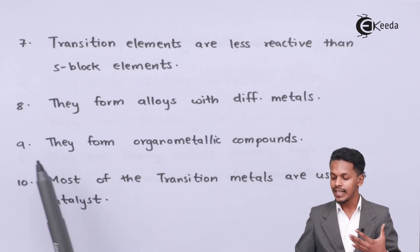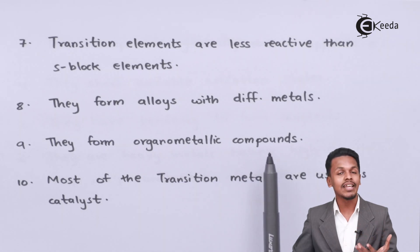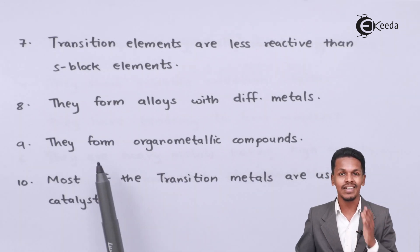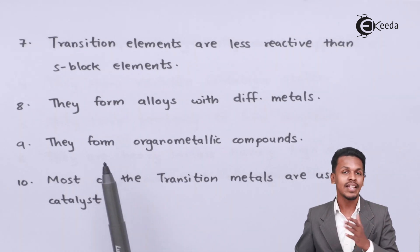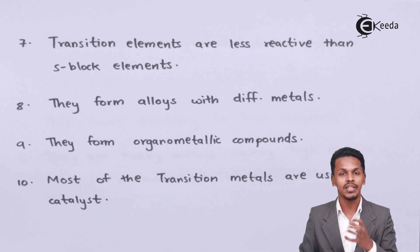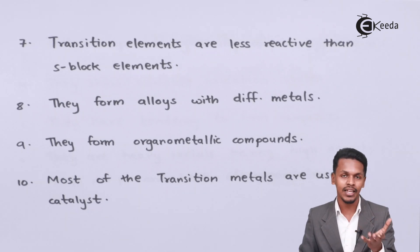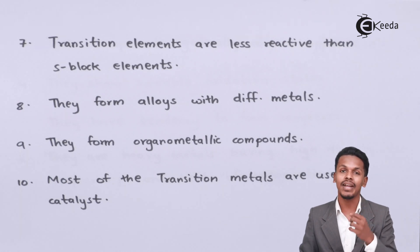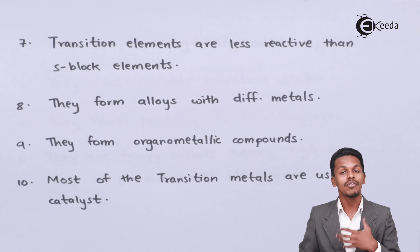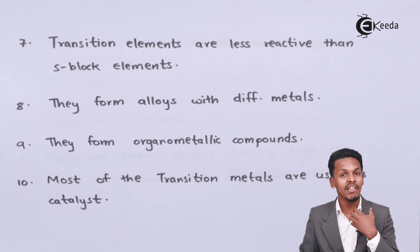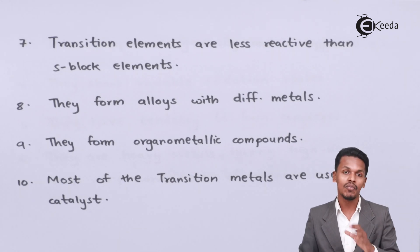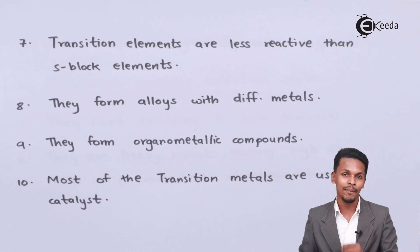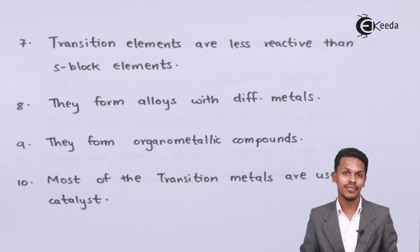They can form organometallic compounds. For example, the Grignard reagent RMgX — here magnesium is an S-block element that forms an organometallic compound. But D-block elements also have the tendency to form organometallic compounds consisting of D-block elements.